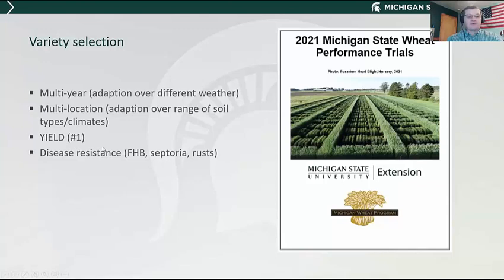There's information in the report on both red and white wheat. In fact, table one is grouped by white first and then by red. So if you're a red wheat grower, you can search through the reds, or vice versa with whites.